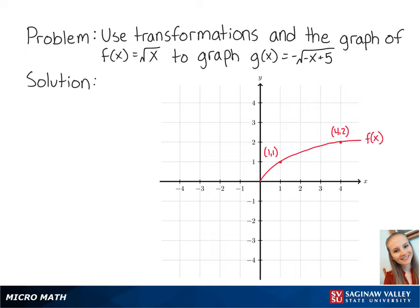For this problem, we want to use transformations and the graph of f(x) equals the square root of x to graph g(x) equals the negative square root of negative x plus 5.